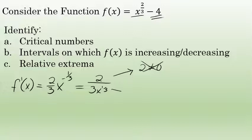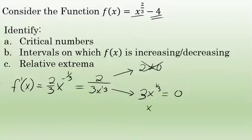There is a value where the derivative does not exist, because a derivative would not exist if its denominator were zero. Setting the denominator 3x^(1/3) equal to zero, it's fairly easy to see that the value of x here will be zero.